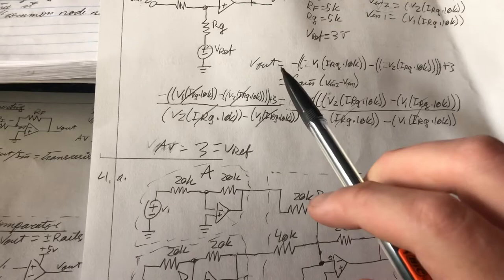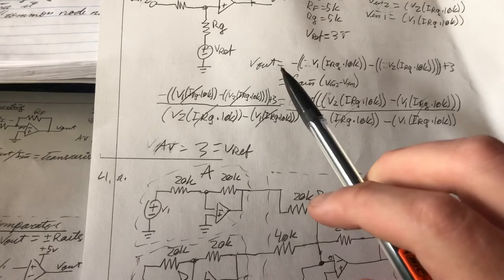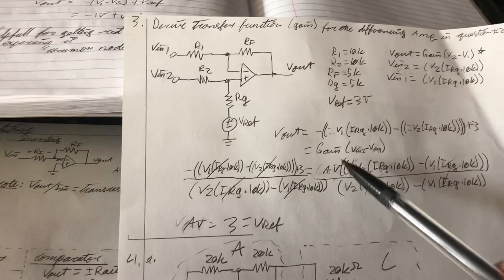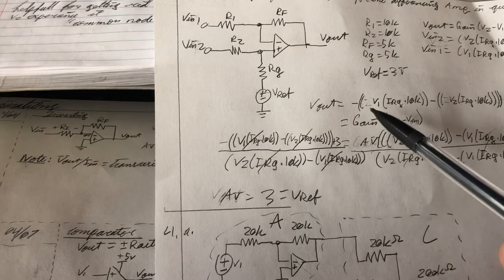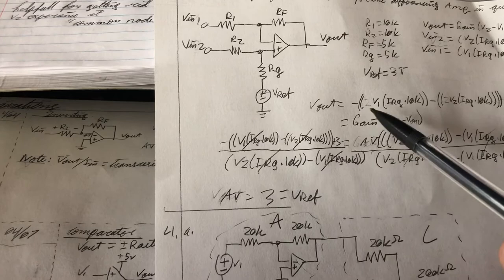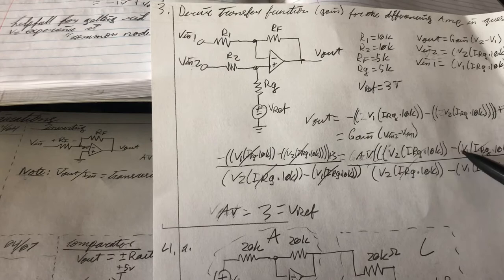So we have the Vout of this guy is going to be equal to this. But it's also going to be equal to the gain times V2 minus V1. So we have this original part right here being plugged into this guy right here. And then we have AV, the gain, times V2 minus V1.